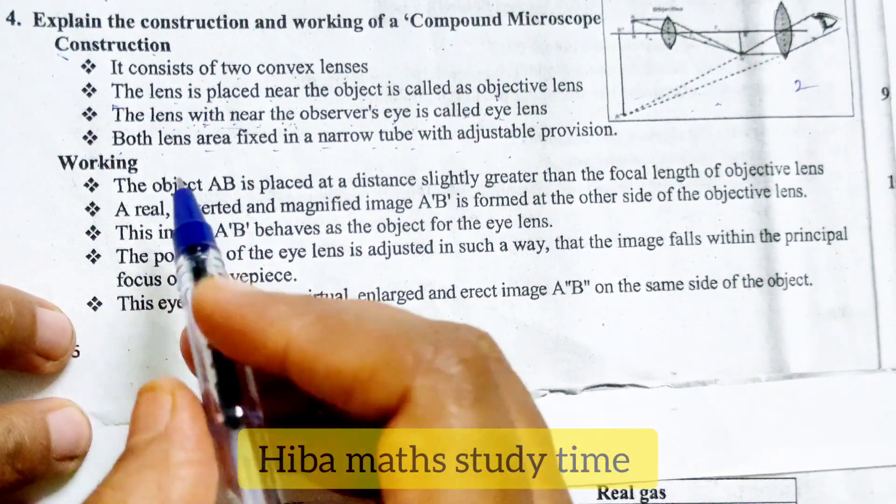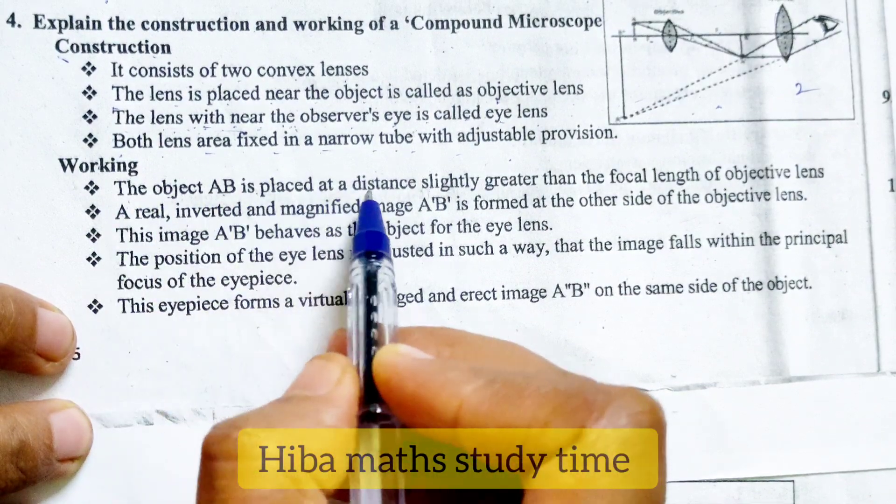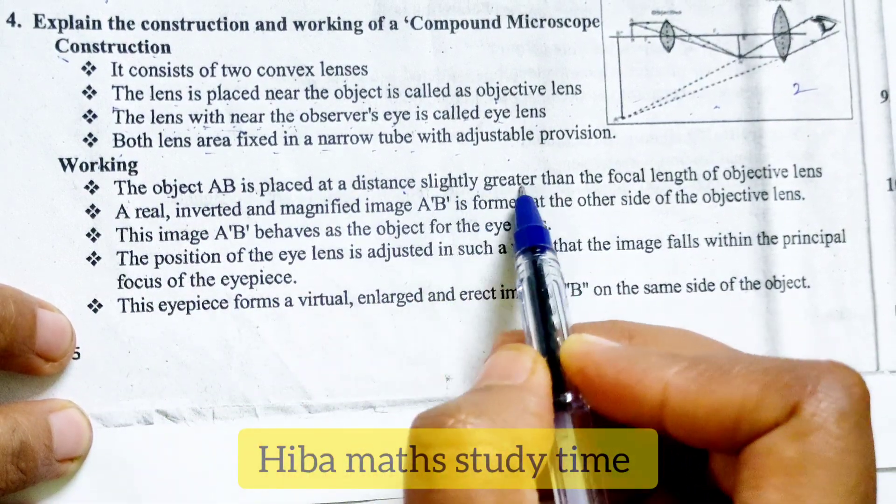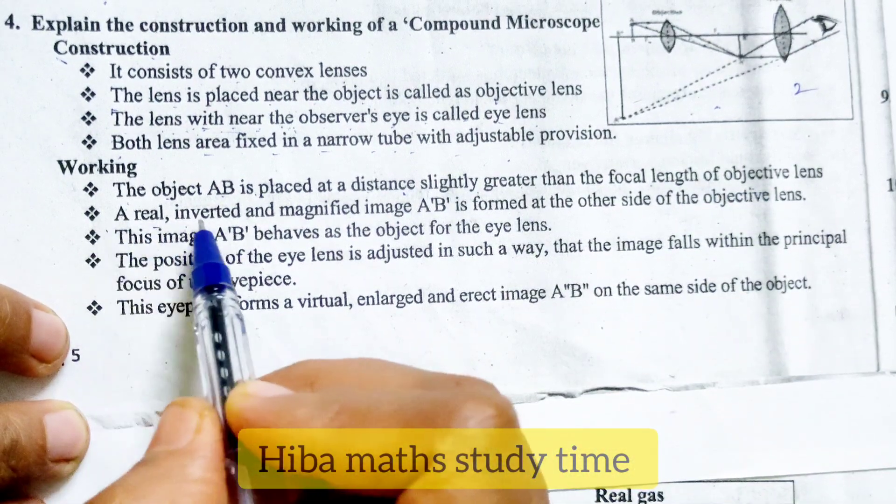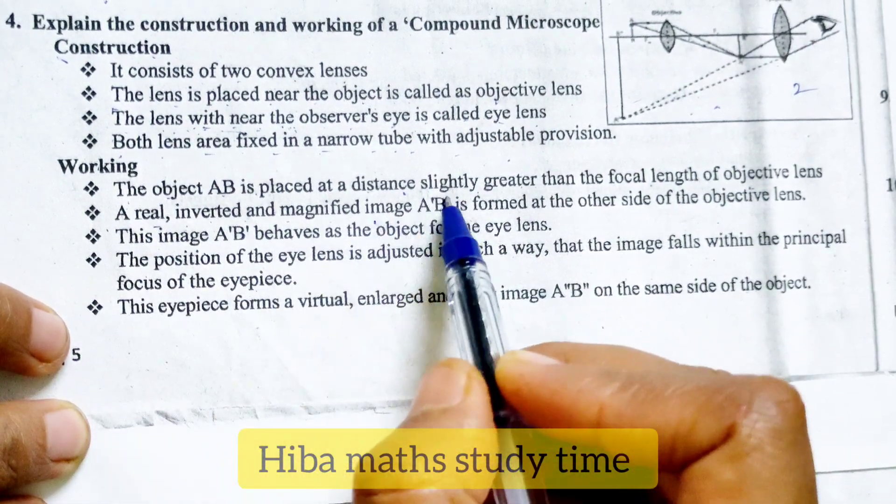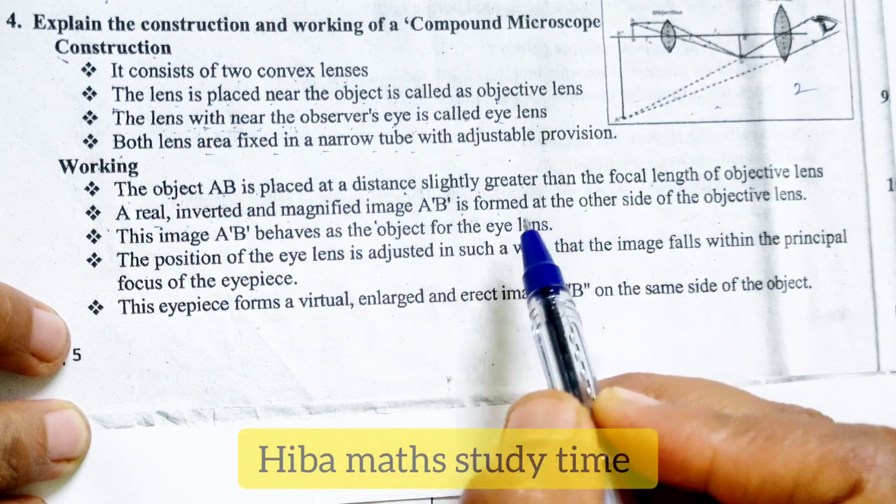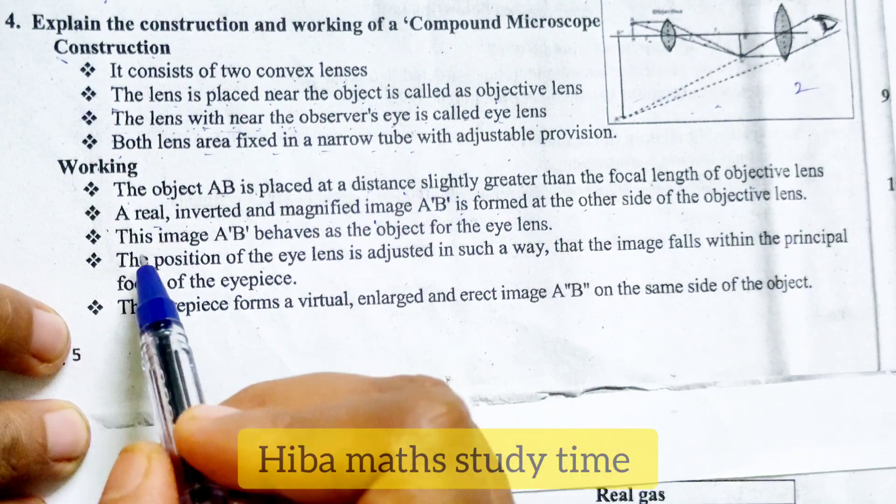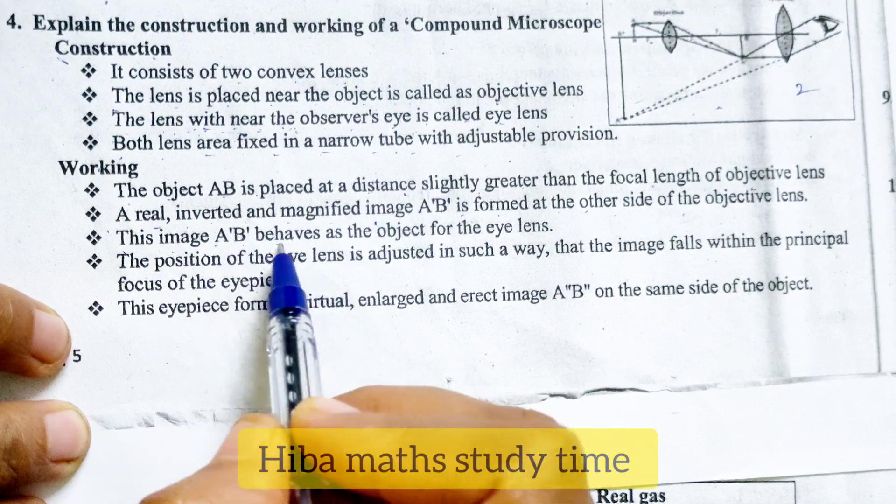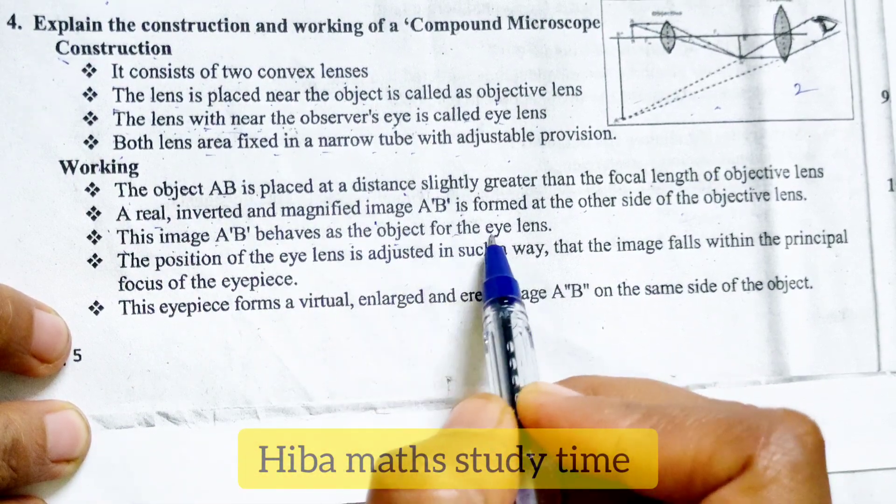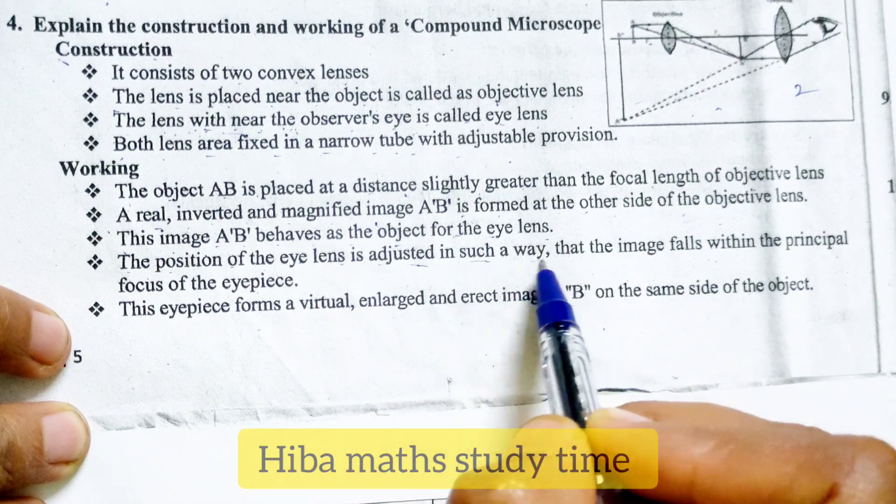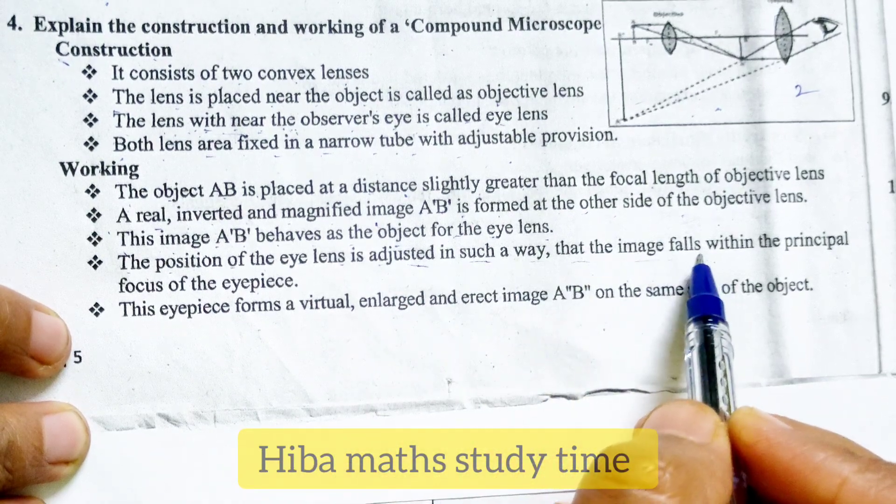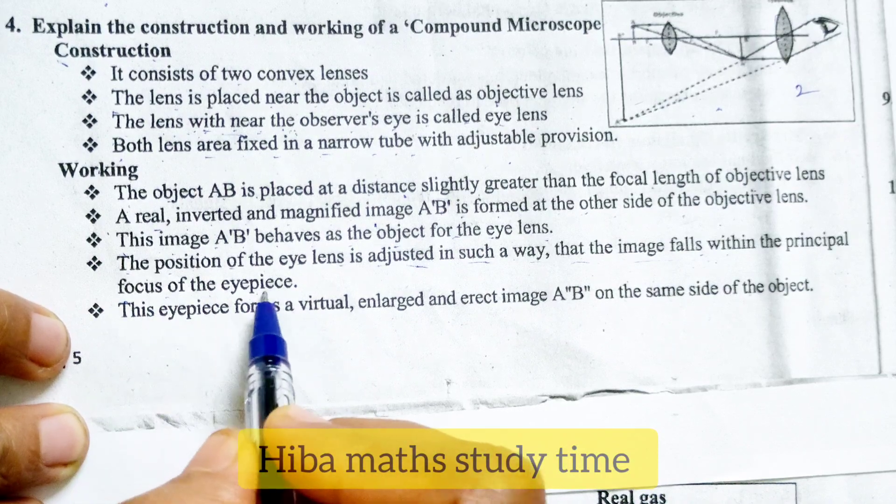Working: the object A B is placed at a distance slightly greater than the focal length of the objective lens. A real inverted and magnified image A dash B dash is formed at the other side of the objective lens. This image A dash B dash behaves as the object for the eye lens. The position of the eye lens is adjusted such a way that the image falls within the principal focus of the eyepiece.